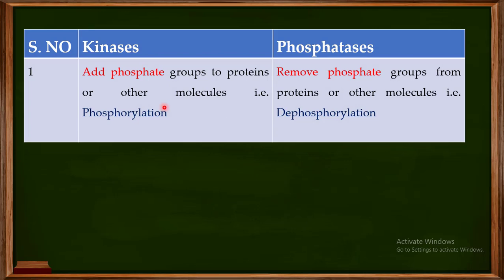The first difference between kinases and phosphatases is that kinases add a phosphate group to proteins or other molecules. This phenomenon of addition of a phosphate group to a protein or molecule is known as phosphorylation. On the other hand, phosphatases remove the phosphate groups from proteins or molecules that have already been attached with a phosphate group.